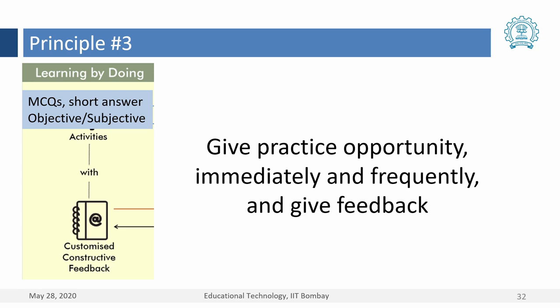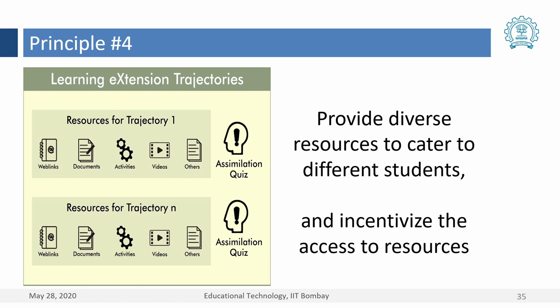Principle number four says: provide diverse resources to cater to different students. On the left there is something called a trajectory — these are called learning extension trajectories. A trajectory is basically a direction of interest. For example, I may be interested in going into the theory of how communication networks work. Somebody else may be interested in how to actually build large-scale networks in the real world. A third person may be interested in knowing what all can be done with these, what components are involved, and how to go deeper into some components. Each of these is a trajectory.